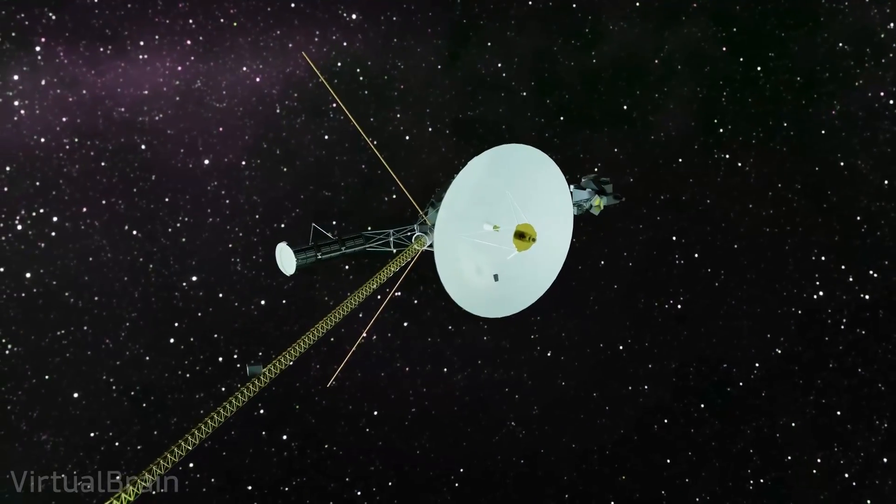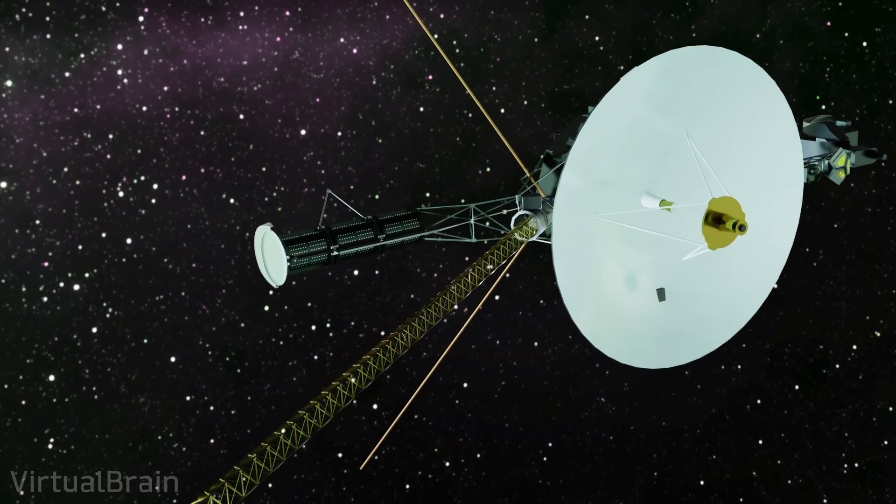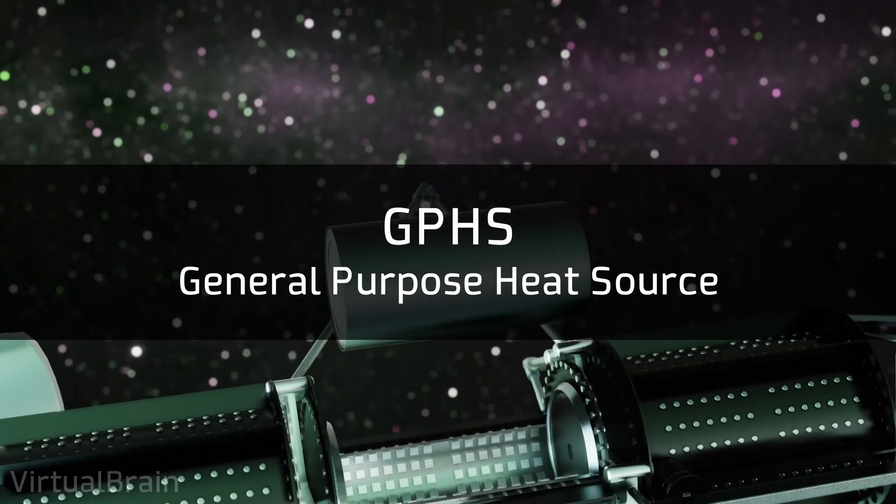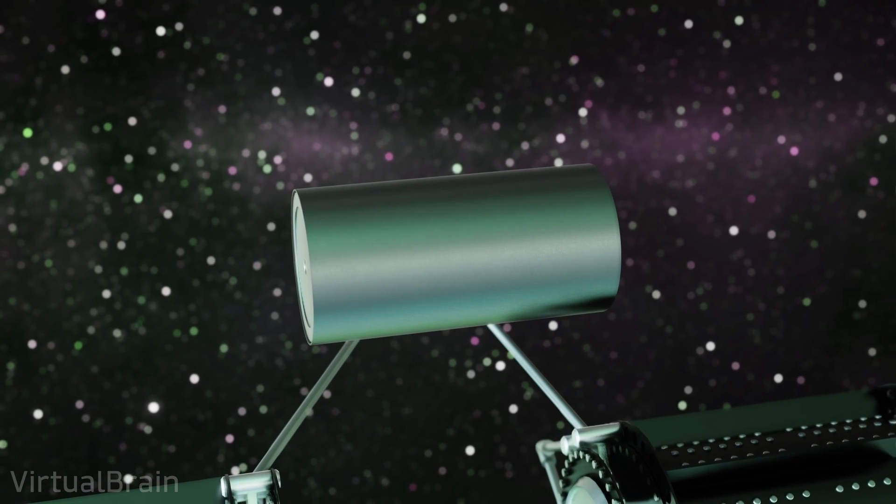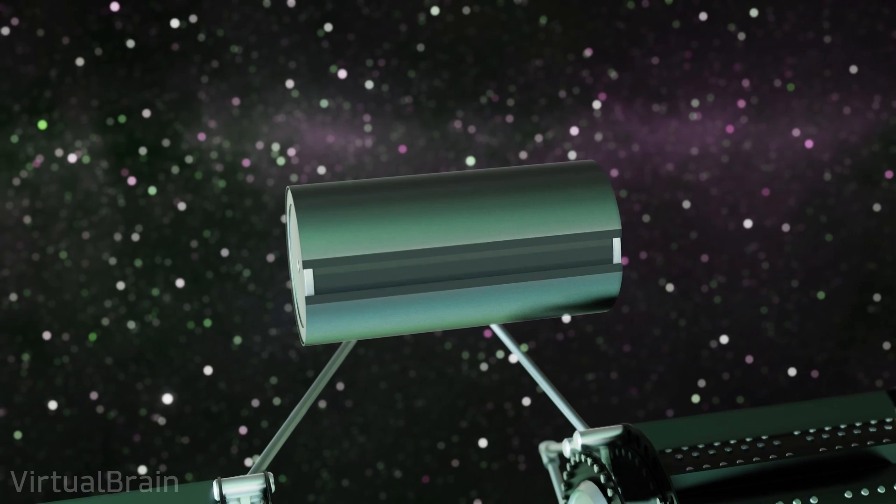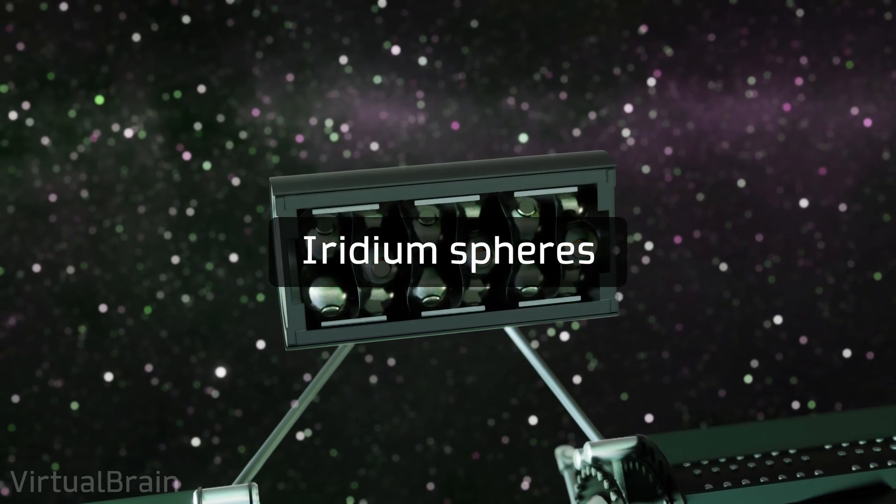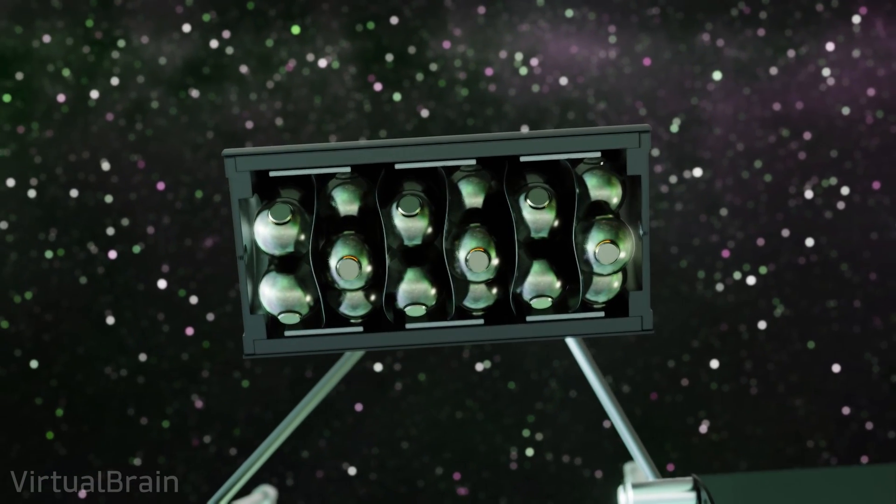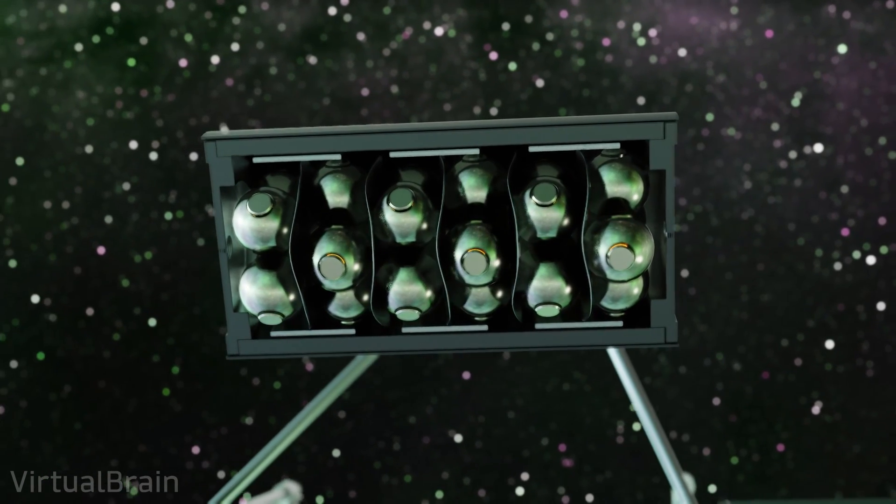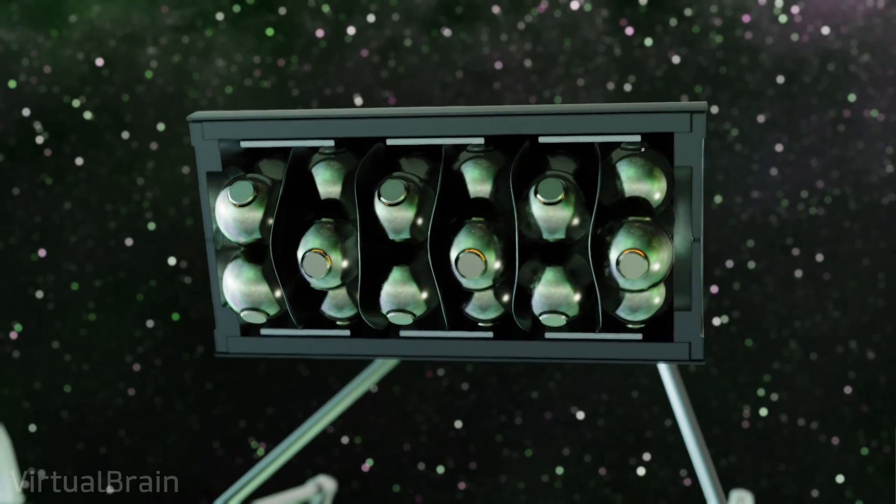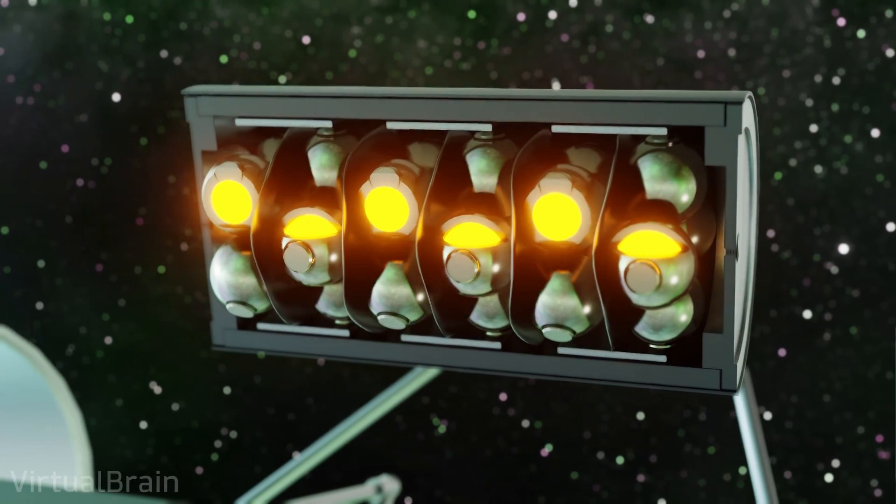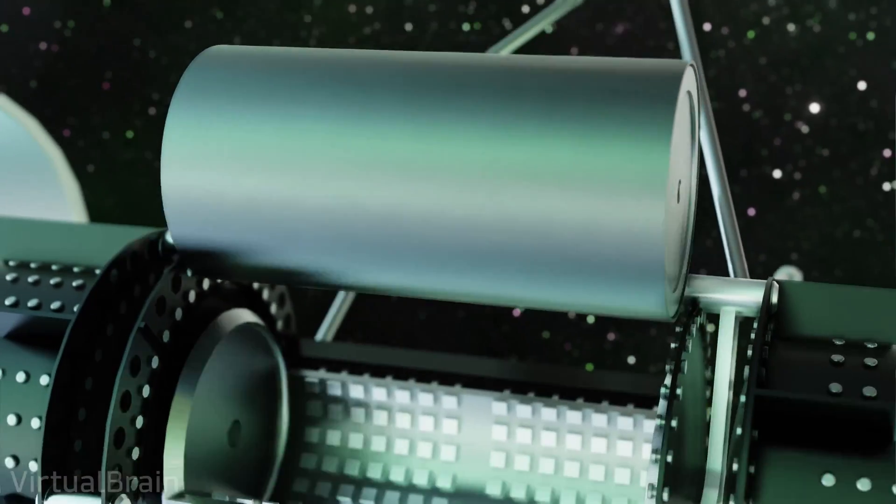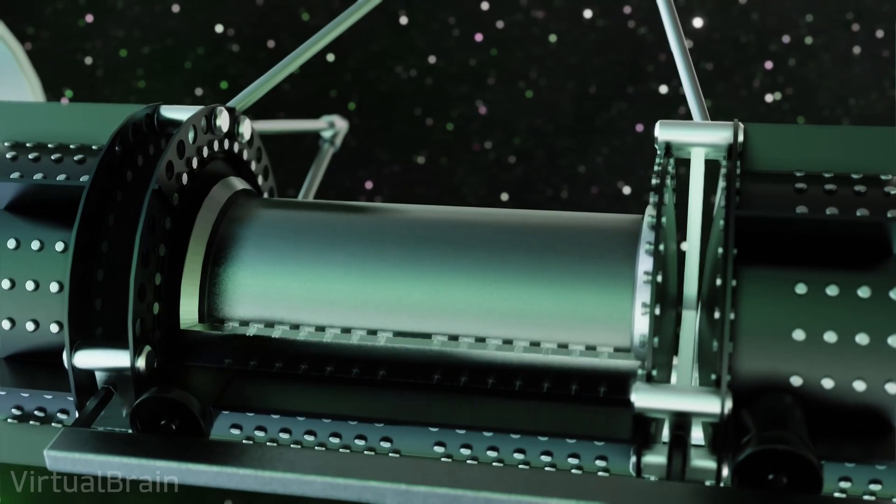Understanding this, if we analyze a radioisotope thermoelectric generator from the inside, its heart is a series of elements known as GPHS or general-purpose heat source, which, in the particular case of the Voyager probes, consists of a cylindrical container with a series of iridium spheres, a metal of high hardness, high density, high resistance to corrosion and a melting point of over 2000 degrees Celsius. That is, a perfect material to contain plutonium-238.